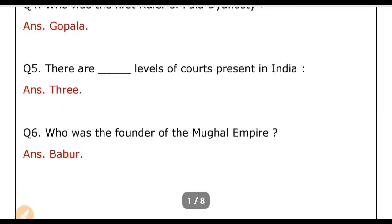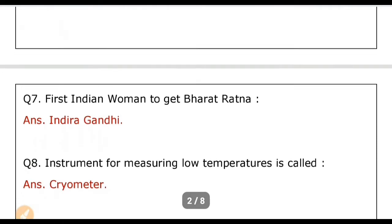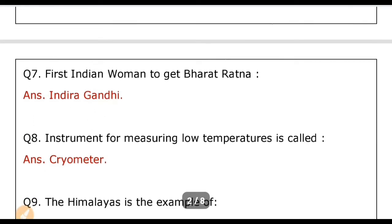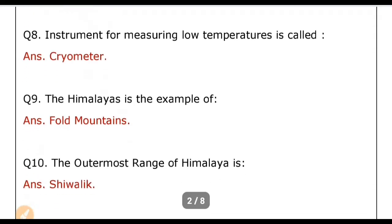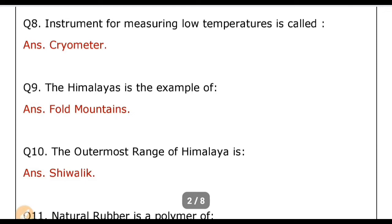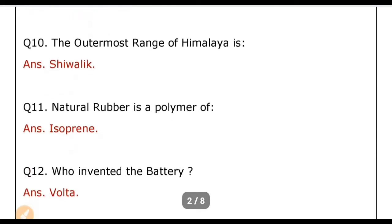How many levels of courts are present in India? Answer: Three. Who was the founder of the Mughal Empire? Answer: Babur. Who was the first Indian woman to get Bharat Ratna? Answer: Indira Gandhi. The instrument for measuring low temperatures is called? Answer: Cryometer. The Himalayas is an example of fold mountains. The outermost range of the Himalayas is? Answer: Shivalik.